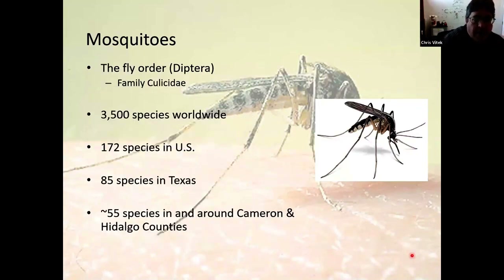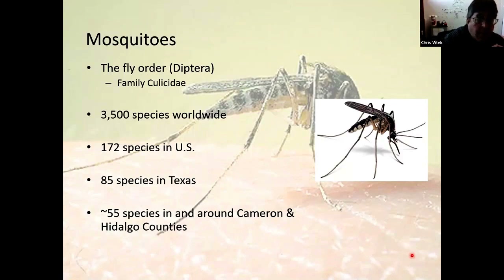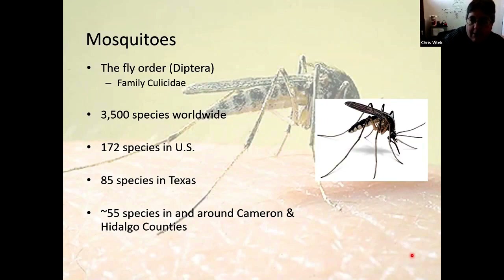Mosquitoes are in the order Diptera, family Culicidae. There are about 3,500 different species of mosquitoes worldwide, and not all of them transmit diseases or even bite people. Here in the U.S., we have about 172 species. In Texas alone, there are about 85 species — more than any other state in the U.S. Here in South Texas, specifically in Cameron and Hidalgo counties, we probably have about 55 different species of mosquitoes.